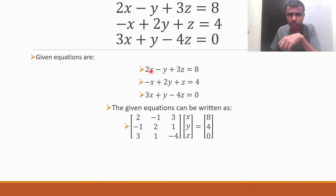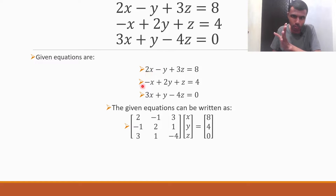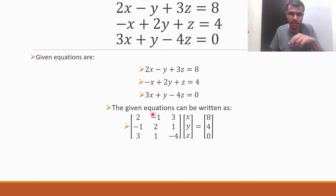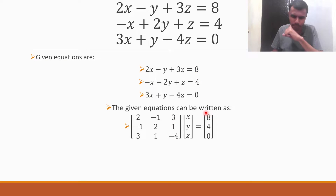Pretty simple guys. Just write the coefficients of x, y, z. Beside x there is 2, so 2. Beside y there is minus 1 — this is basically minus 1 into y — so minus 1, and 3. And on the RHS there is 8, so here also there is 8.